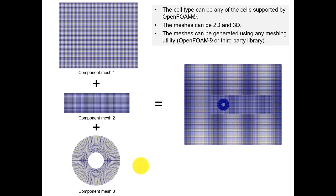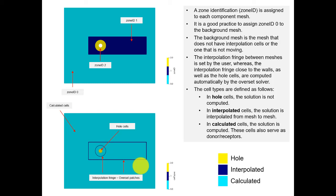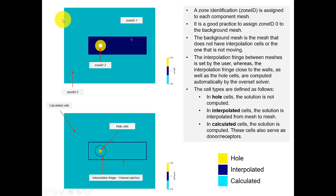The basic idea is to create the meshes individually and then assemble everything. The next step is setting up the simulation, which requires creating different zones. We need to identify those meshes: in light blue we have zone ID zero, dark blue is zone ID one, and yellow is zone ID two. We assign these IDs so the solver knows the priorities in the meshes and does the interpolation correctly.